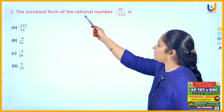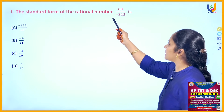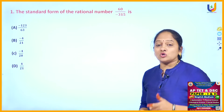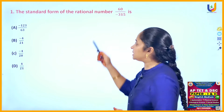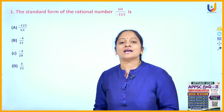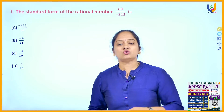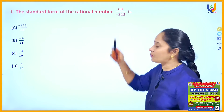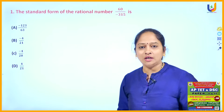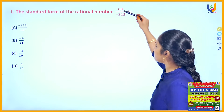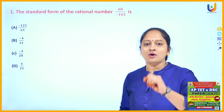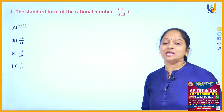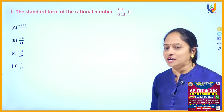The first question: the standard form of the rational number 60 by minus 315 is. A rational number is said to be in standard form if it satisfies two conditions. The first one is the denominator should be positive, and the second is the HCF of numerator and denominator is 1.